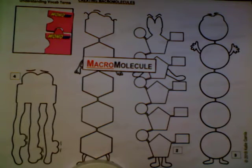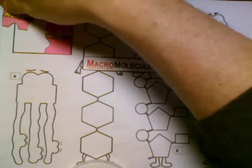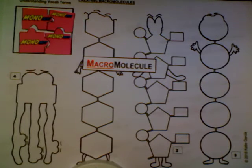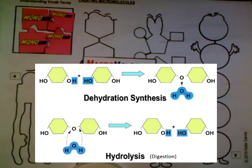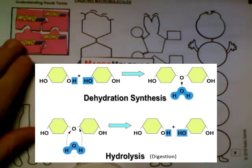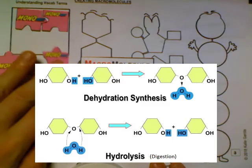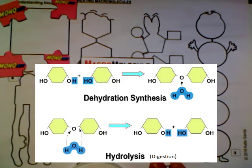The way this happens is through a process called dehydration synthesis, where water is going to be removed from the molecules to allow for bonds to form to create these larger structures, which are going to be called polymers. Now if you ate a large polymer, we could actually digest that polymer down to its individual monomers by the opposite reaction, which is called hydrolysis, where water is added to the molecule to allow for that digestion.